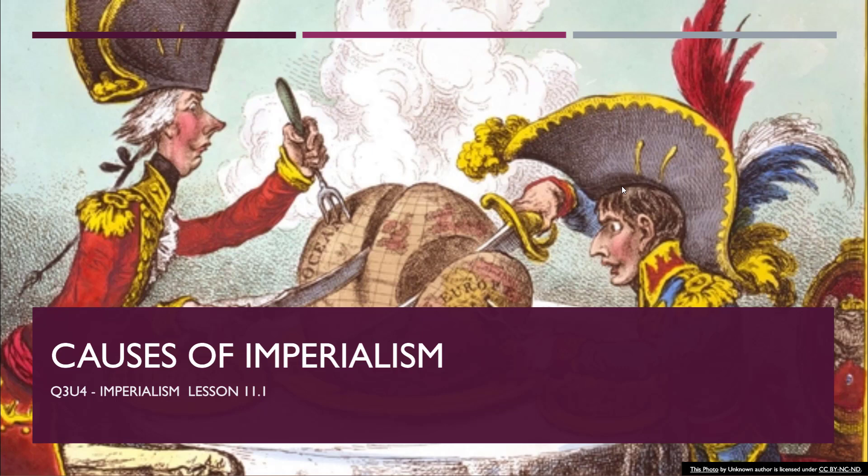Welcome back, this is Miss V, and we're back for another edition of History with Miss V. Today we are in a new unit — Unit 11, Quarter 3, Unit 4 — and we're discussing imperialism. But first we need to discuss what caused imperialism around the world, and later in the unit we'll get into the effects of imperialism on various parts of the world, especially Africa and Asia.